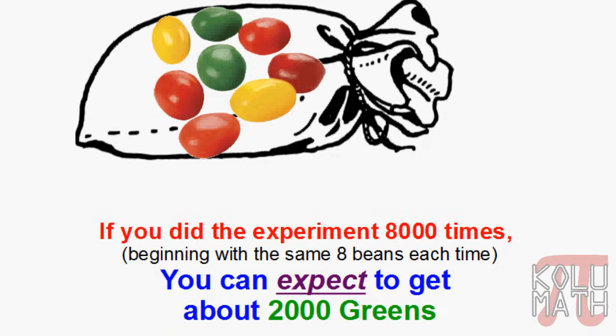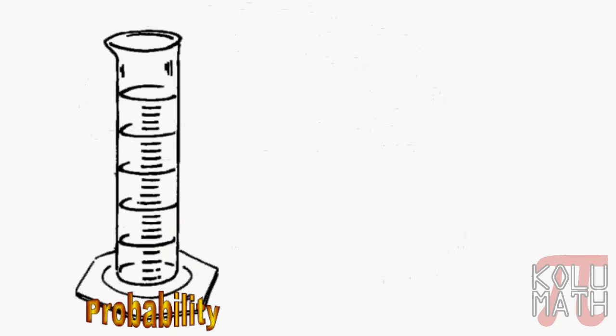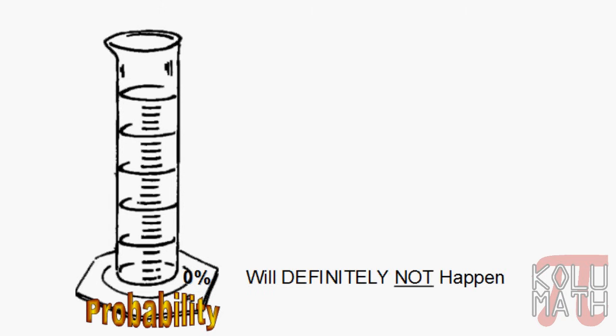You can also look at probability like a graduated cylinder. When probability is at zero percent, the glass is empty — there's no chance of the event happening; it definitely will not happen. Something like that would be the sun rising in the west. The sun always rises in the east; it will never rise in the west. There's a zero probability of the sun rising in the west.